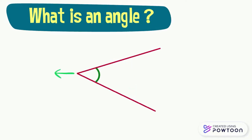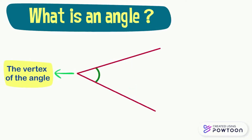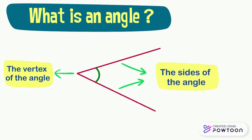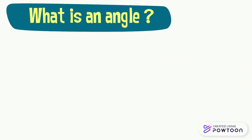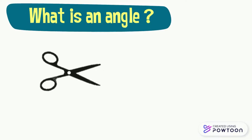This point is called the vertex of the angle. The two semi-lines that form the angle are called the sides of the angle. Imagine a pair of scissors — when you open the scissors, you get an angle.